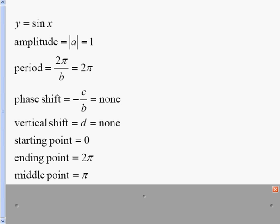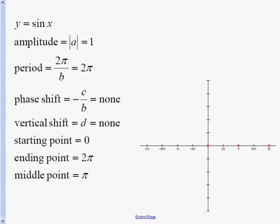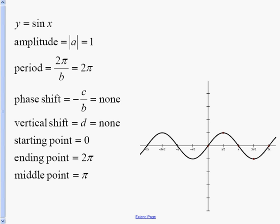When graphing a sine curve, the first thing you want to do is plot the starting, middle, and ending points on your zero axis. In this case we have zero, π, and 2π — all on our zero axis. Between the starting point and the middle point, the sine curve reaches a max at its amplitude, and between the middle and the ending point, the sine curve reaches a minimum. We connect them and we get an oscillating sine curve. You can see one period between zero and 2π, and another period between negative 2π and zero.